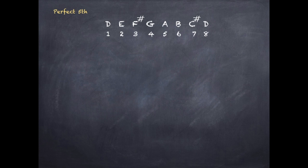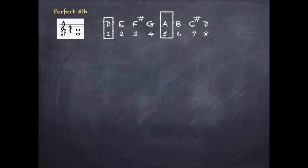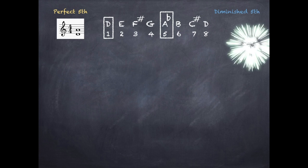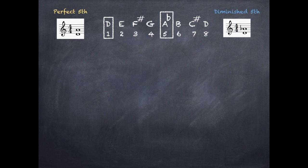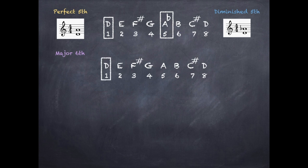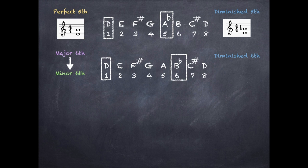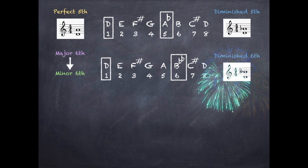To create a diminished fifth interval, first create a perfect fifth interval. We go from D to the fifth note, which is A. To create a diminished fifth, flatten the top note of the perfect fifth, so A becomes A flat. To create a diminished sixth interval, first create a major sixth interval — D to the sixth note, which is B. Convert that to a minor sixth by flattening the top note, so B becomes B flat. Then create a diminished sixth by flattening the top note of the minor sixth again, so B flat becomes B double flat.